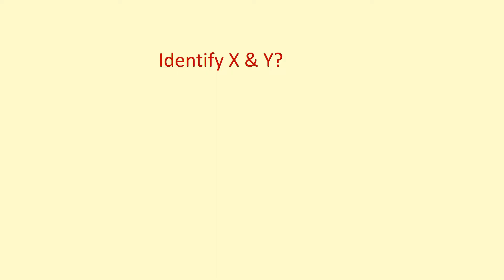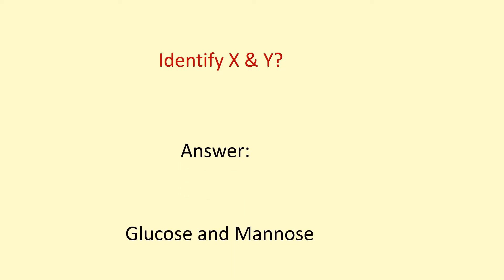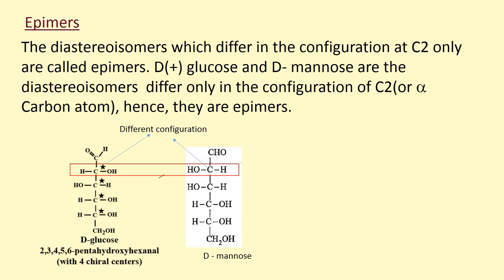The primary question is identify X and Y, and the answer is glucose and mannose. This riddle explains epimers, epimerization, and osazone formation reaction.